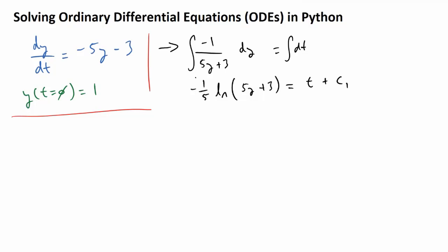Next I'm going to multiply both sides of this equation by minus 5 so we can cancel out that 1/5. What we're now going to be left with is: natural log of (5y + 3) is equal to minus 5t minus 5 times that constant c1.